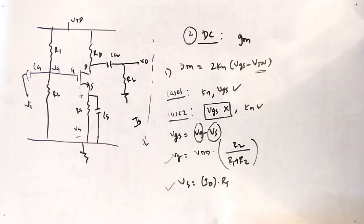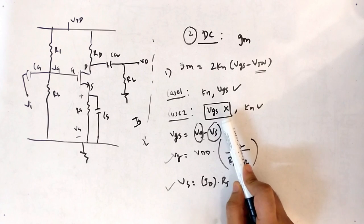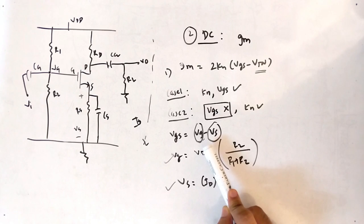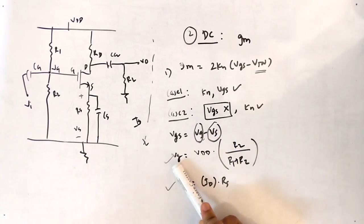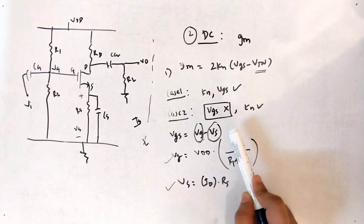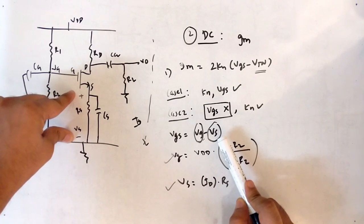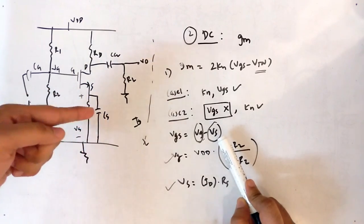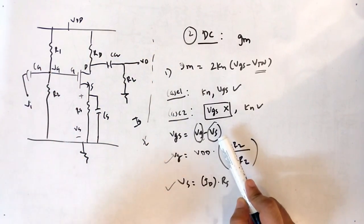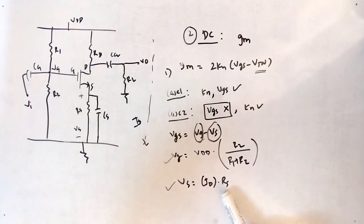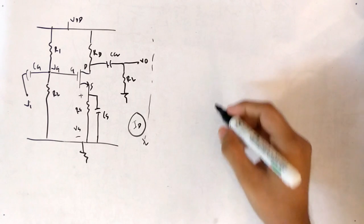Recap of Case 2: VGS is not given, so VGS equals VG minus VS. First find VG using the Thevenin logic. Then find VS — the voltage in the source area equals ID times RS, since current ID flows through resistance RS. With both VG and VS found, we can determine VGS.